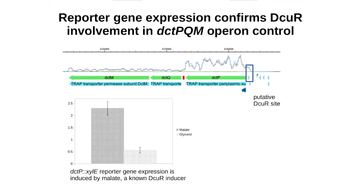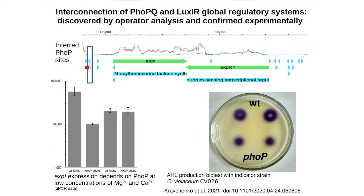Operator analysis suggested DCUR transcription factor involvement in DCTP-QM operon control. This suggestion was confirmed with DCTP-QM reporter gene expression measurements in a culture medium with malate, which is a known DCUR inducer. One more demonstration comes with 4P involvement in XPI expression. Inferred putative 4P sites in the XPI region are confirmed with qPCR data and the difference in acyl-homoserine lactone production in wild-type and 4P mutant strains.